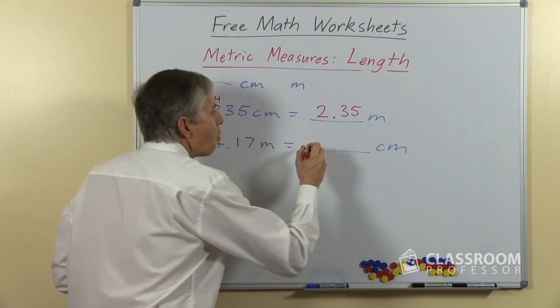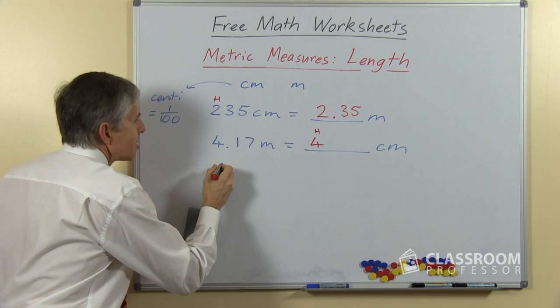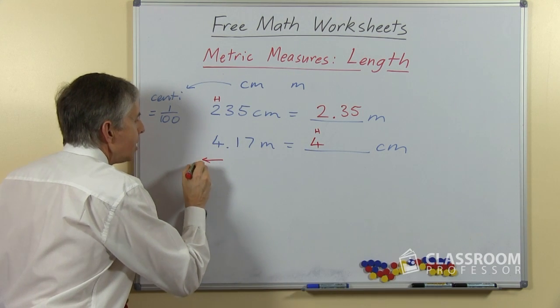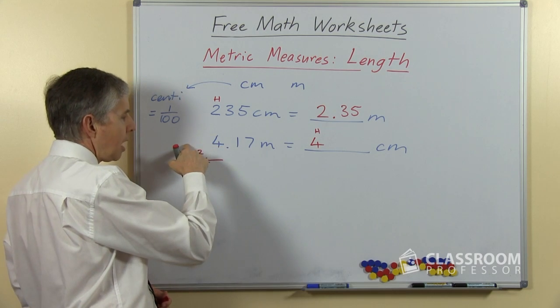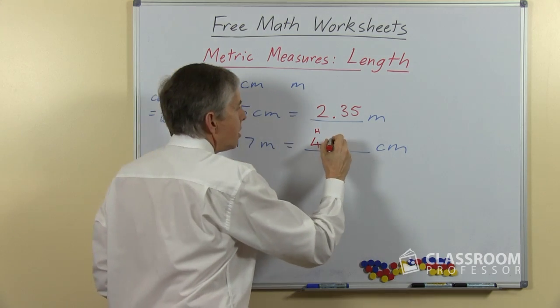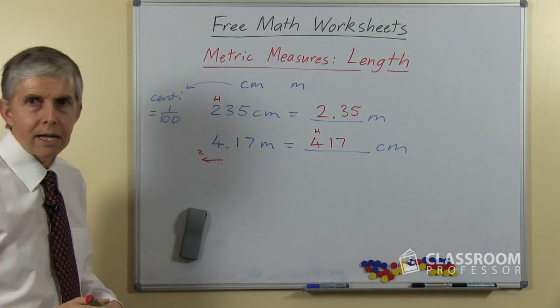So in 4 meters there would be 400, so this time the numbers are getting bigger. This time our digits are actually going this way, 2 places and this 4 will end up in the hundreds place. 400 and the 1 and the 7 go after it, so that's the tens and the ones, 417.